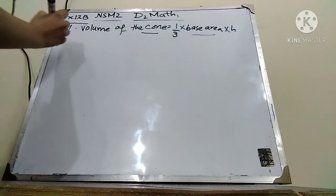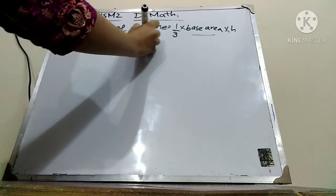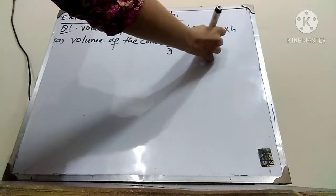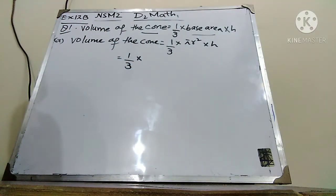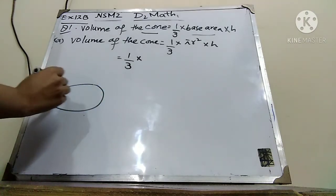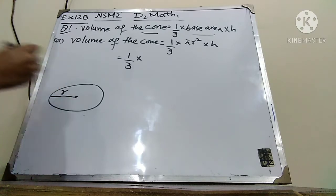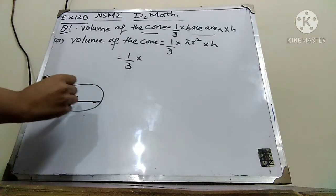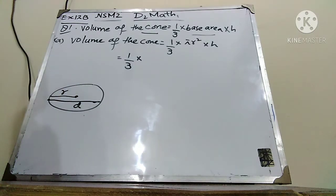Okay, in part A you have to find out the volume of the cone. So I will write 1/3 × pi r square × height. Now I am going to put the values. Any line from the midpoint to the edge of the circle is called radius, and the diameter is a line from one end to the other end. The radius is given as 6 cm and height of the cone is 14 cm.